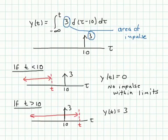Okay, so we had two different cases. t is less than 10, we get 0. t is greater than 10, we get 3. You might ask, well, what happens if the limit is exactly at 10? And there we have a discontinuity. So if t is exactly equal to 10, it's a jump between 0 and 3.